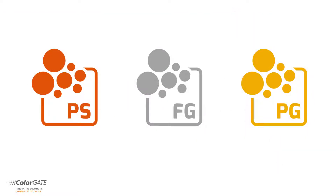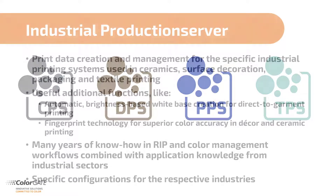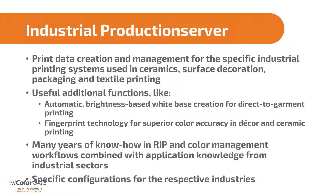This powerful tool allows a consistent and conformant reproduction of color. Our extensive range of modules and custom-made software offers proficient solutions for entrepreneurs to industrial print production operations. Information about other versions, as well as FilmGate and ProofGate, can be found on our website colorgate.com. Our industrial digital print software has been categorized into four distinct segments: Ceramic, Decor, Packaging and Textile Production Server. Effective additional functions such as automatic white underbase creation in DTG Textile Printing or highly accurate fingerprint technology in Ceramic and Decor Printing round off our solutions.